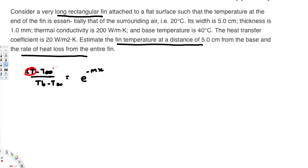We need the ambient temperature, T∞. Whenever they say surrounding air, that is the ambient temperature T∞. We also need the base temperature Tb, which is provided. And we need e^(−mx), where x is the distance — that is 5 cm, which is provided. But we still need to know the m value.